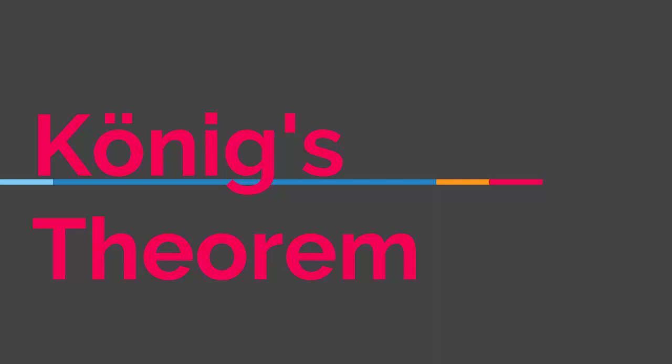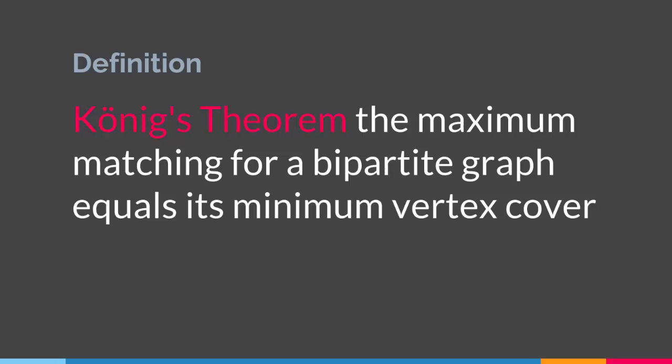Hello everyone. In this lecture we are going to talk about Koenig's theorem. Koenig's theorem says that the maximum matching for a bipartite graph equals its minimum vertex cover. So if we have a bipartite graph, the maximum matching for that particular graph equals its minimum vertex cover. As simple as that.